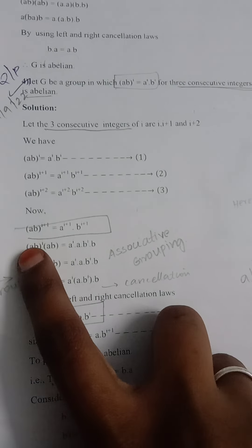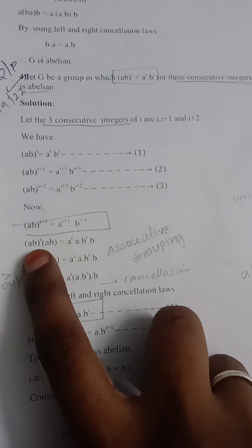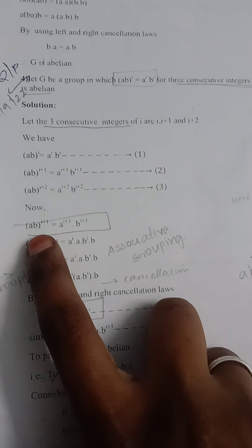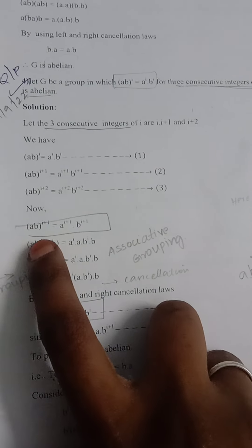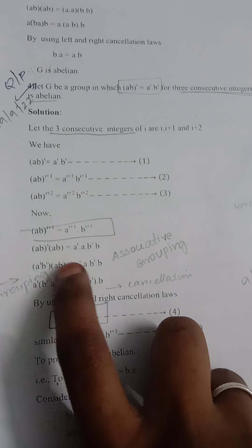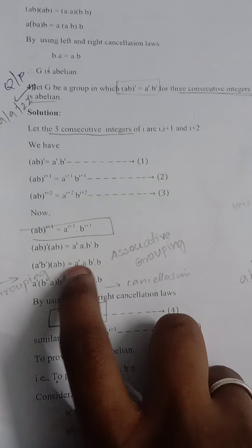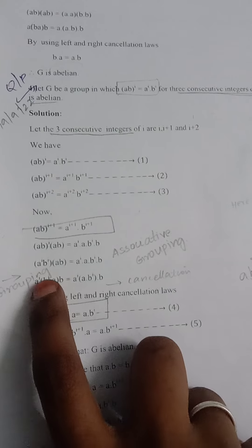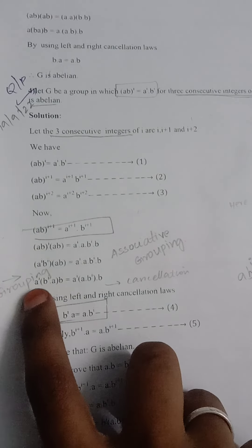Using the associative rule for grouping, we have a^i * b^i on one side, with ab remaining. Since i is common to both a and b, we get a^i * b^i, with ab separately.